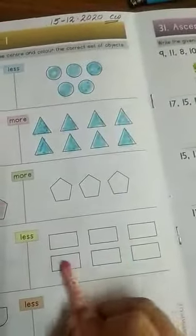So, count the rectangles. 1, 2, 3, 4. These are 4. And 1, 2, 3, 4, 5, 6. These are 6. 4, 6. Which one is less? Kam kaunse hai? This one. So, you have to color this.